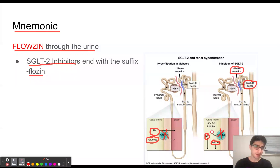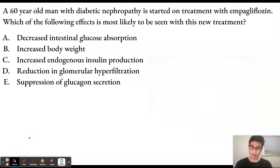Remember that renin is converted into angiotensin 2, and angiotensin 2 is going to be vasoconstricting the efferent arterioles, which increases the GFR. So if we have lower renin levels, then we're also going to have lower angiotensin 2 levels, and thereby the GFR is going to go down. So the answer to this question is answer choice D, which is reduction in glomerular hyperfiltration.